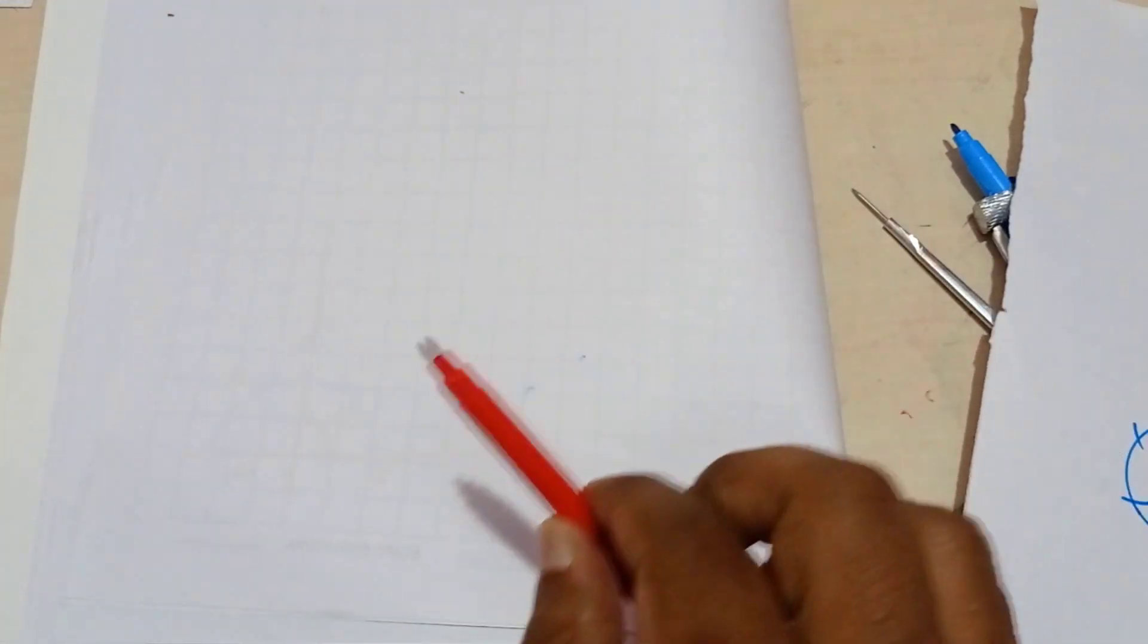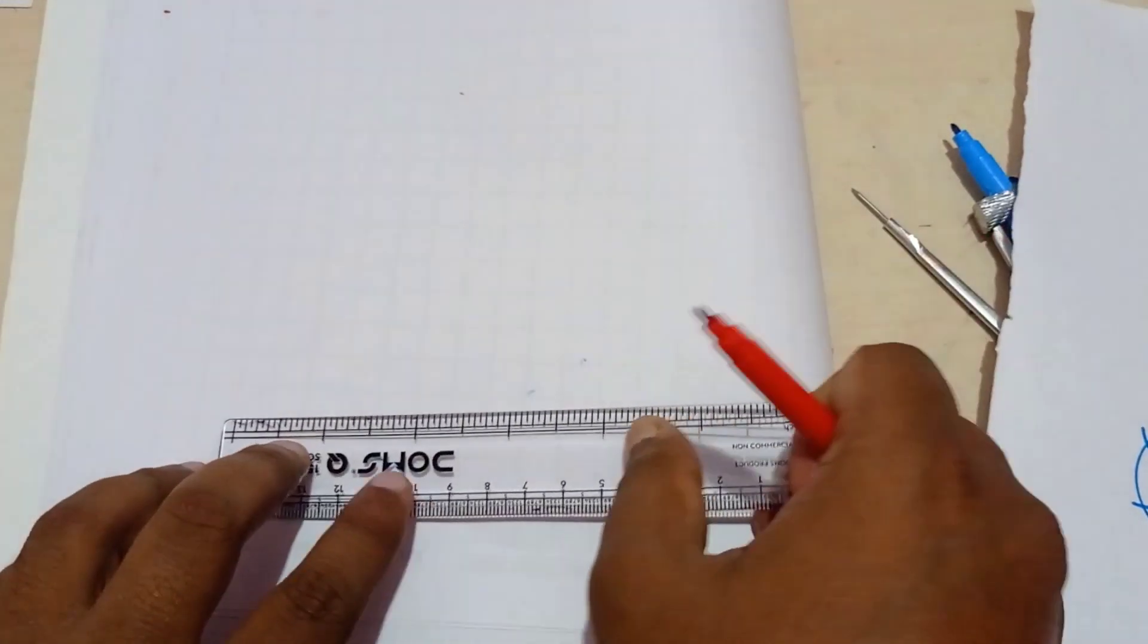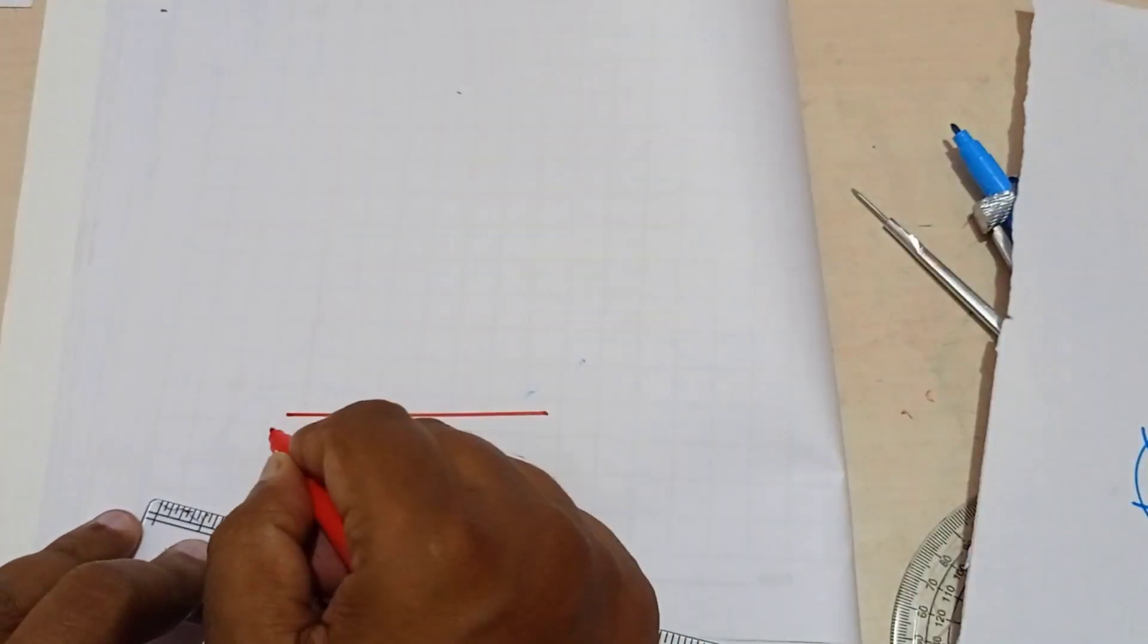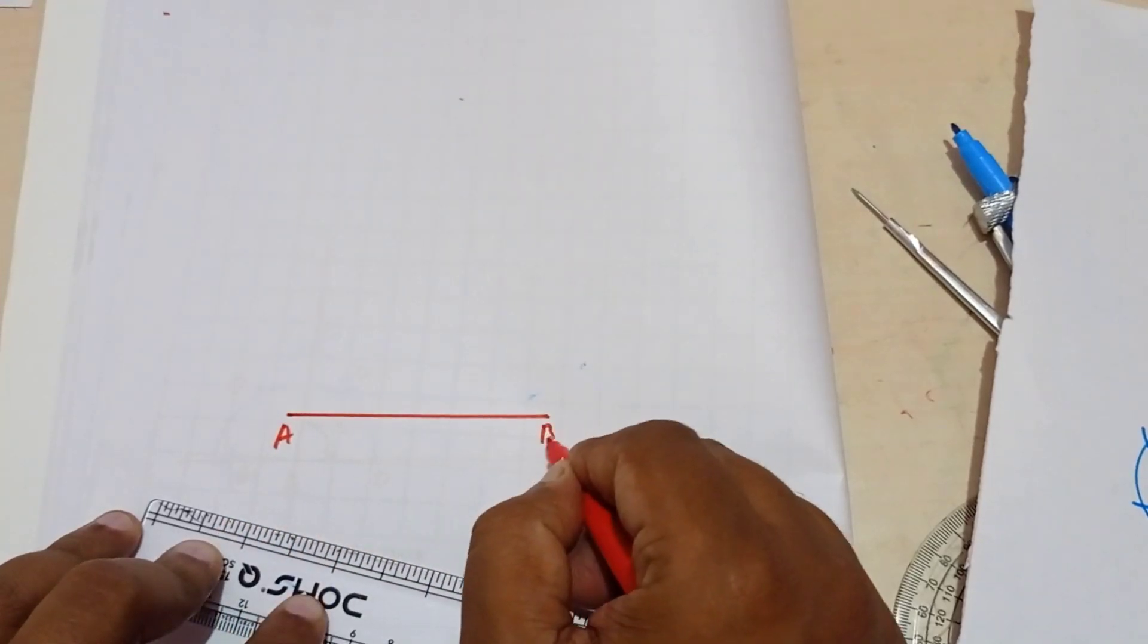First I am going to draw one straight line which is of any length. Write this as A and this as B.